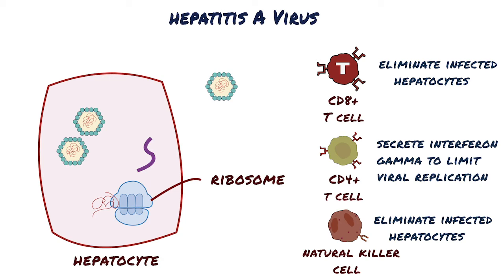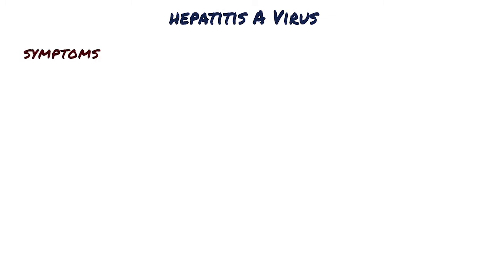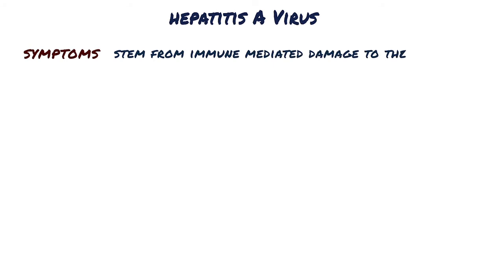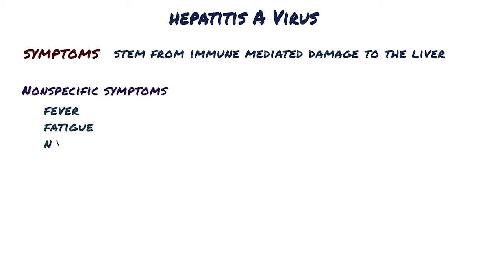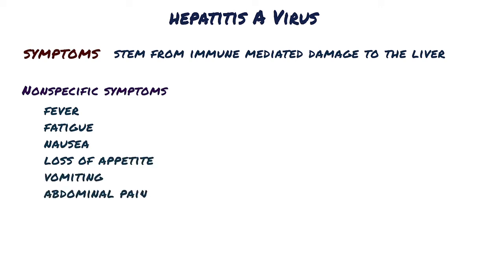This results in liver damage. The symptoms caused by the Hepatitis A virus stem from immune-mediated damage to the liver. The symptoms occur abruptly 15 to 50 days after exposure. Non-specific symptoms include fever, fatigue, nausea, loss of appetite, vomiting, and abdominal pain.